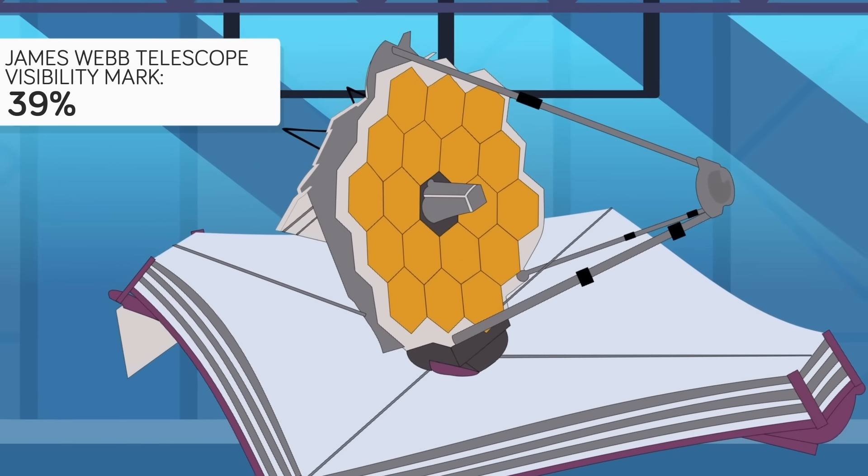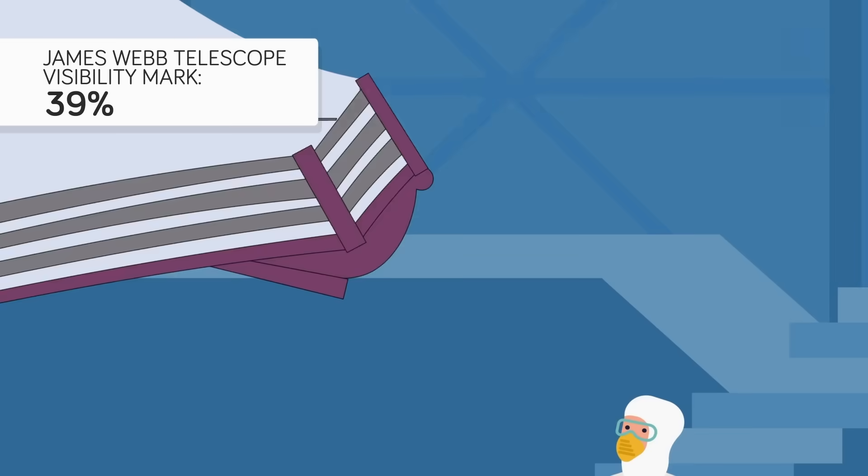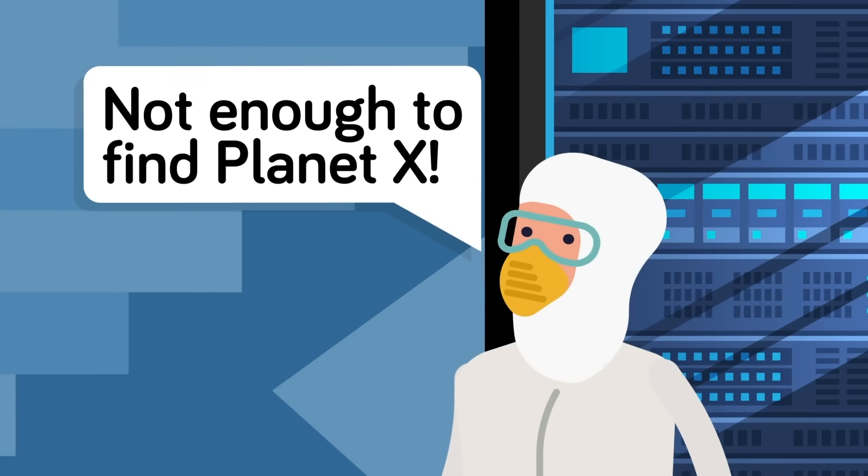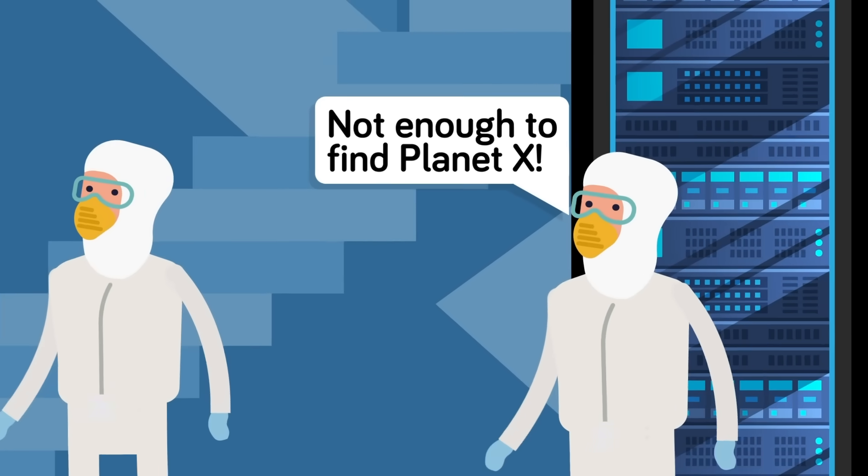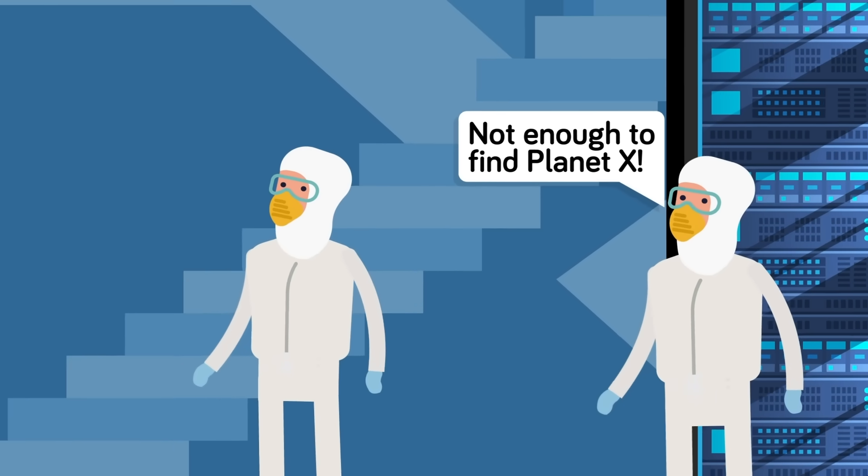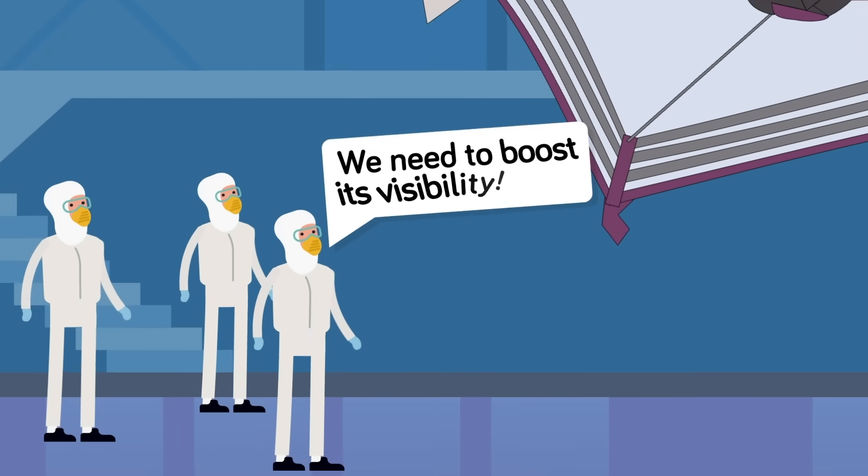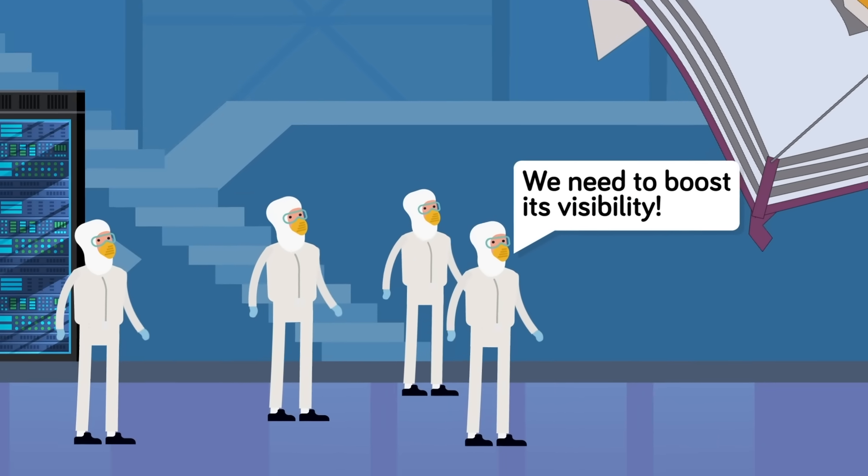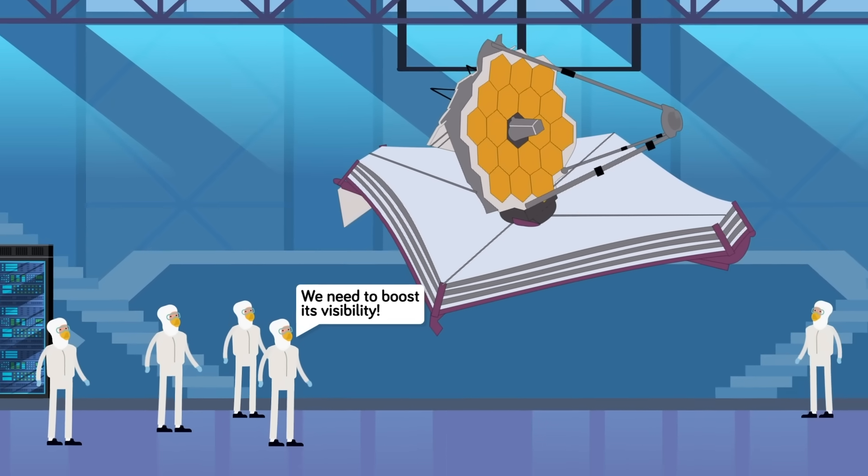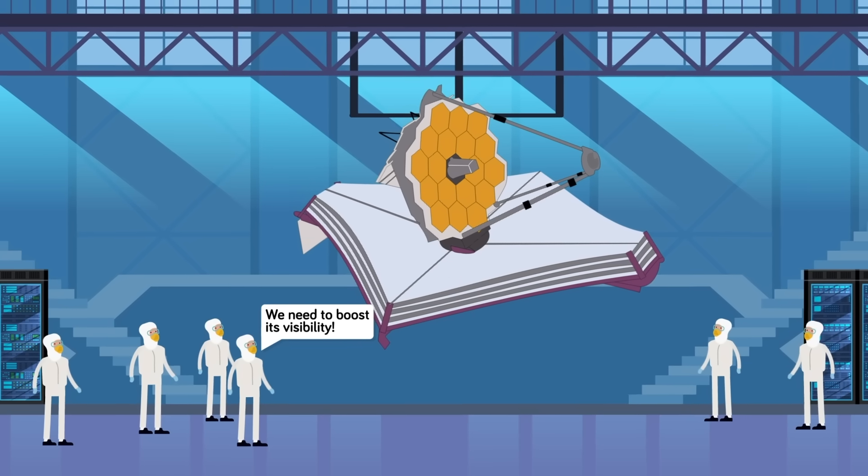But if looking for something as faint as Planet X would be, it would need to be told with much greater precision where to look. This is where calculating the gravitational effects of Planet X on known objects can narrow the search, just like with Neptune and Pluto.